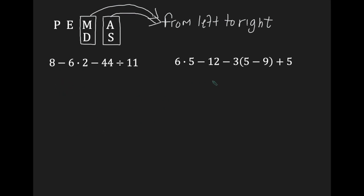Let's look at our two examples. The first one: I have 8 take away 6 times 2, take away 44 divided by 11. Do we have parentheses? No. Do we have exponents? No. Can we multiply or divide from left to right? Yes. Going from left to right, multiplication is first. So: 8, take away 6 times 2 is 12, minus 44 divided by 11.